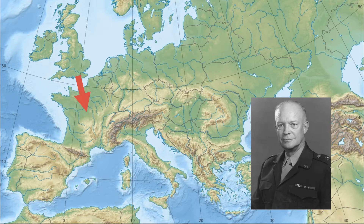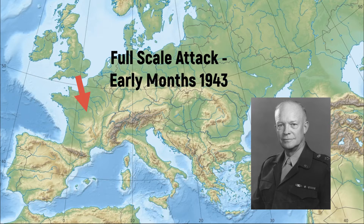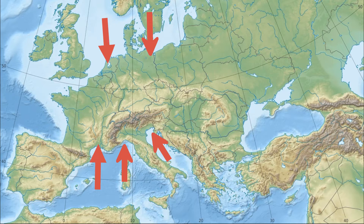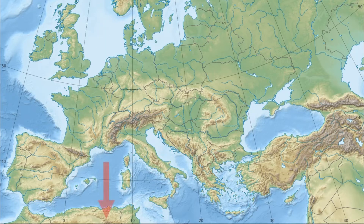FDR agreed with this. The U.S. and Britain would have a full-scale attack on Europe by the early months of 1943, with a French beachhead established sometime in the fall of 1942. The British had a different approach — they wanted naval and air attacks to position themselves around the continent, with the majority of them in the Mediterranean Sea, which would make an eventual attack on Germany much easier. The British ended up agreeing with the Americans, but pushed hard to begin the invasion with an attack in North Africa.